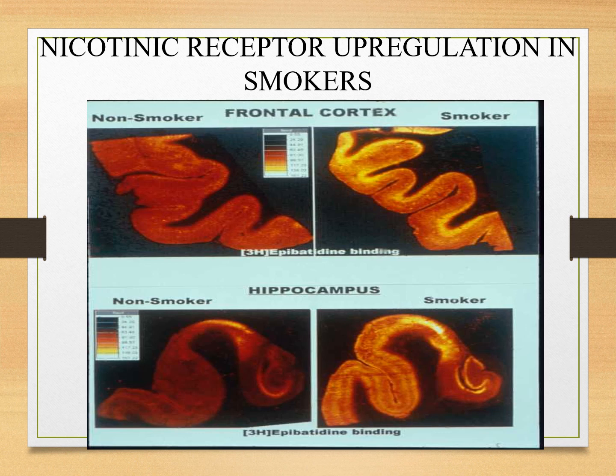Because of this reinforcing behavior, repeated usage of tobacco and smoking occurs. Nicotinic receptor upregulation also occurs in smokers, and because of this upregulation, actual changes happen in the brain. You can see that in the non-smoker brain, the frontal cortex is normal, but in smokers it is significantly decreased — there is atrophy. The hippocampus is also decreased in smokers. So there are actual structural changes in the brain happening in smokers.